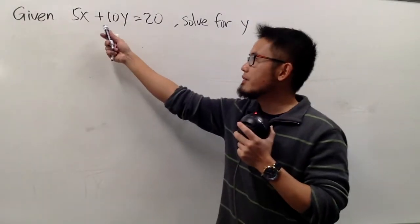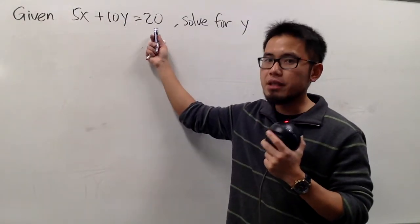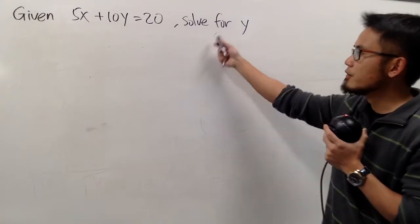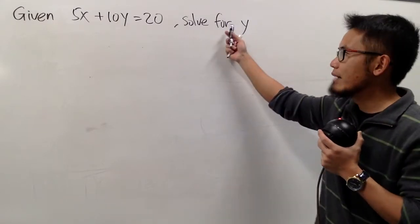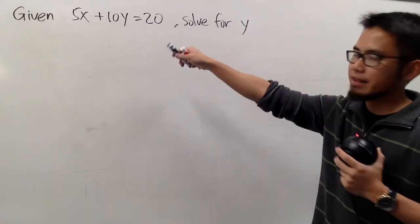Okay, we are given that 5x plus 10y is equal to 20, and we are going to solve for y, meaning that we have to get y by itself from that equation.